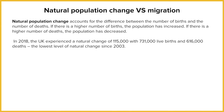Let's start off by looking at the idea of natural increase and migration increase. A natural increase is when you take the difference between how many people were born in the UK and how many people died in the UK. The difference is either a natural increase or a natural decrease, depending on whether there were more births or more deaths.